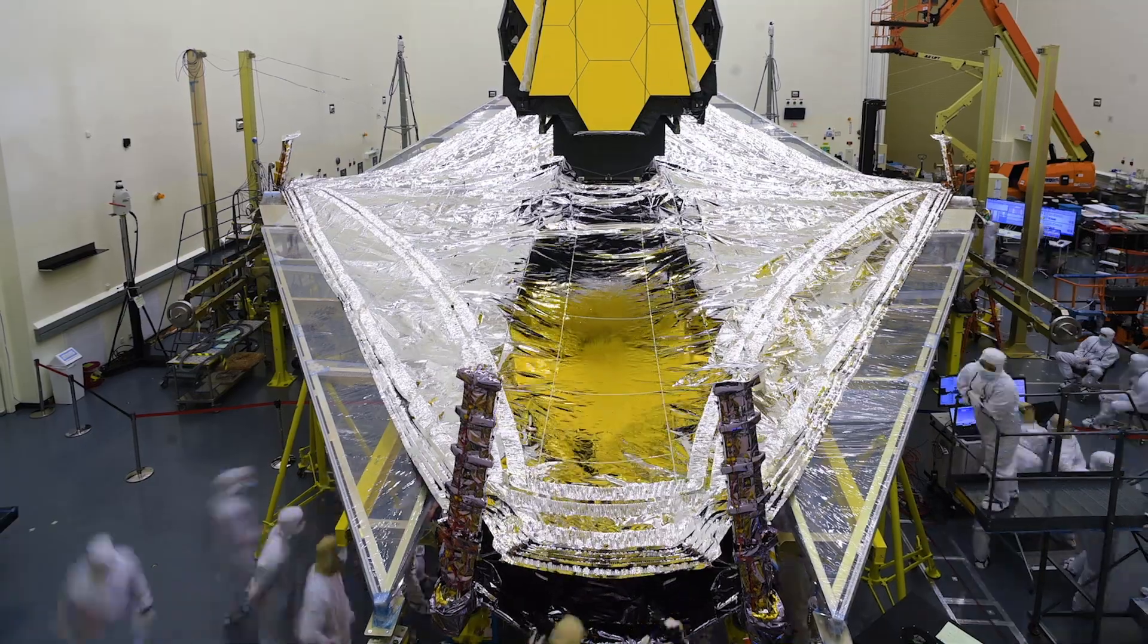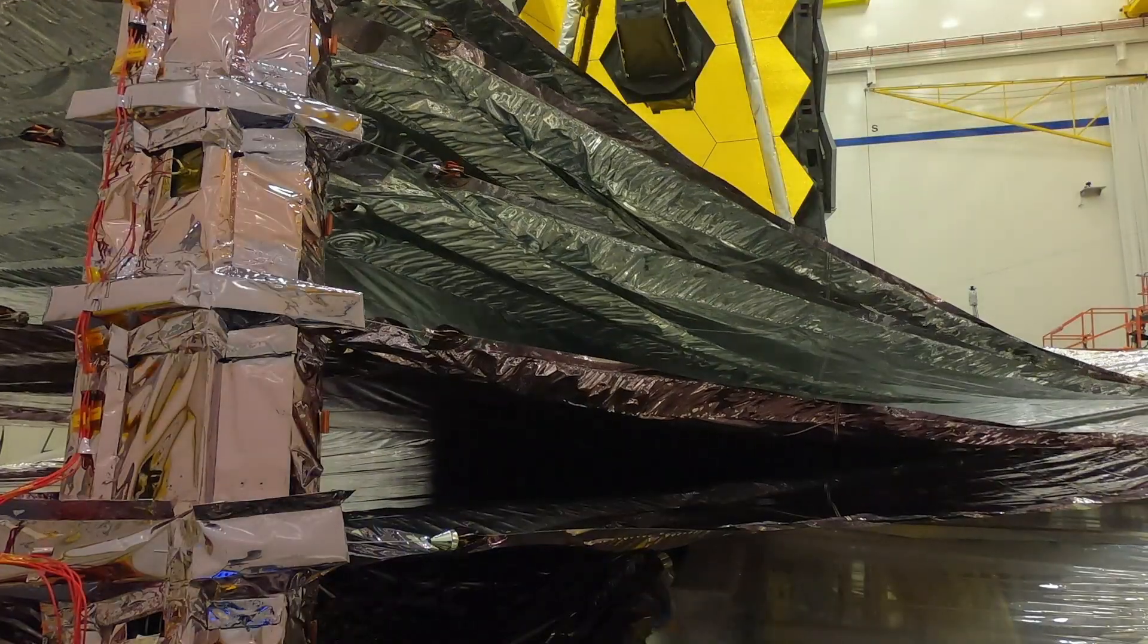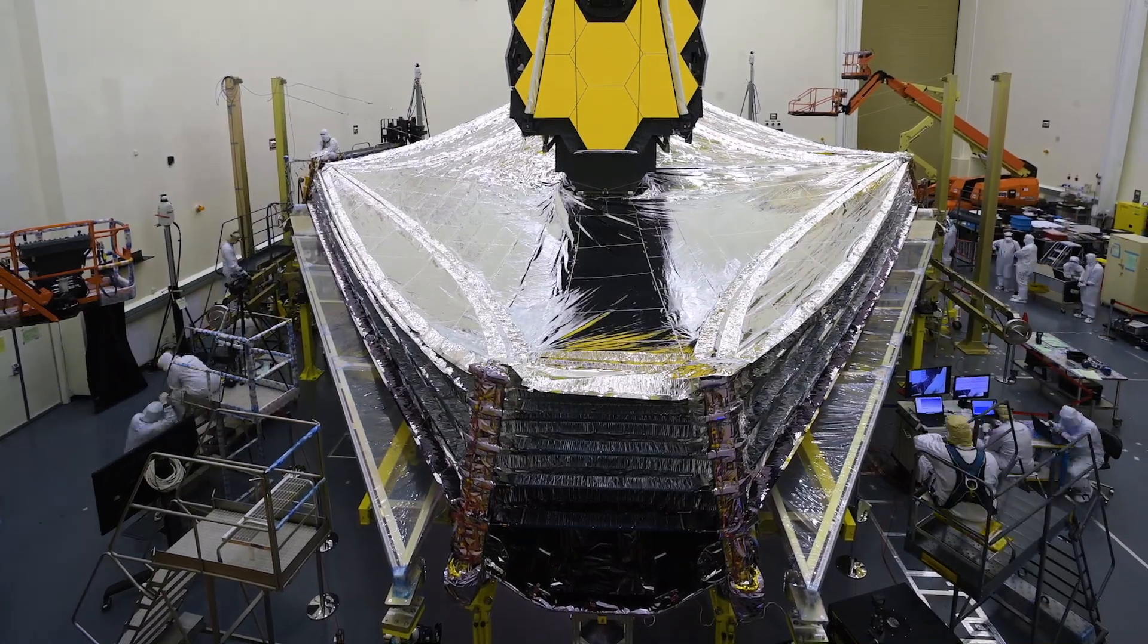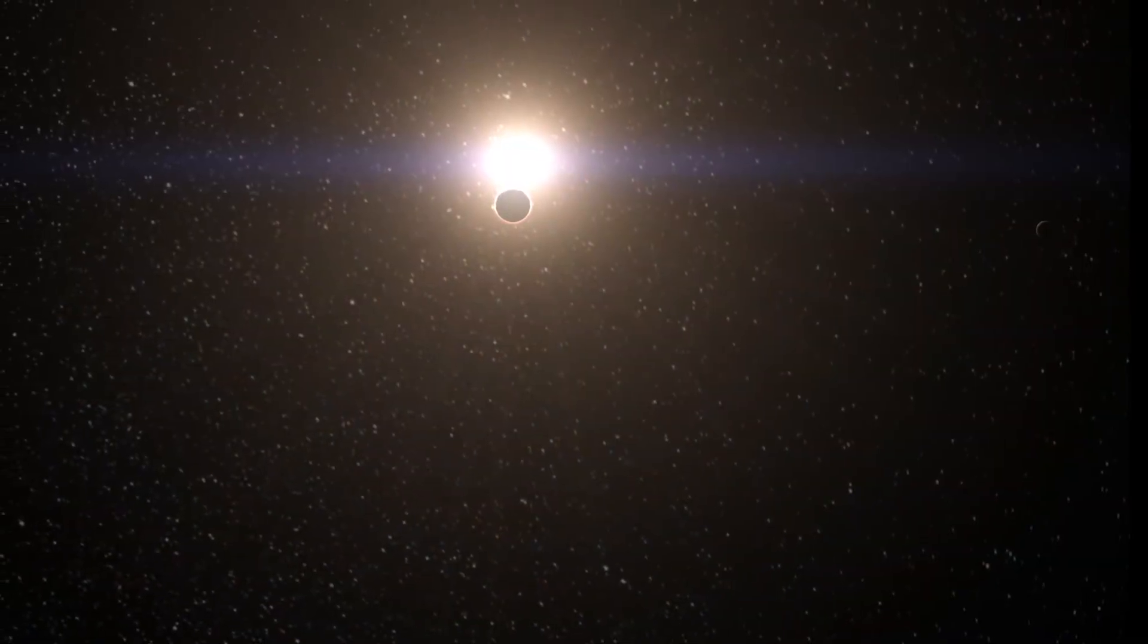Getting this cold is done with the help of the largest sunshield ever flown. A five-layer, tennis court-sized sunshield that blocks heat from the sun, earth, and moon.